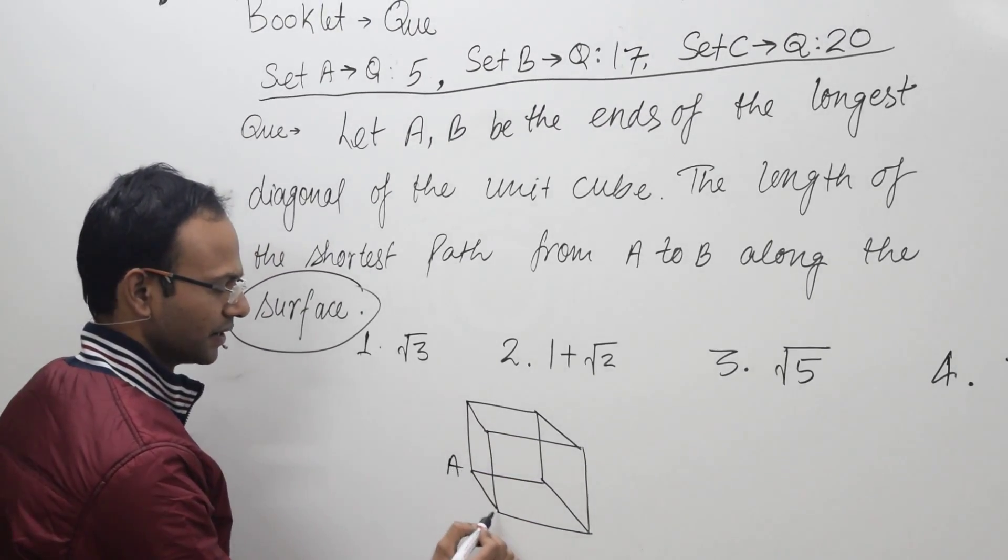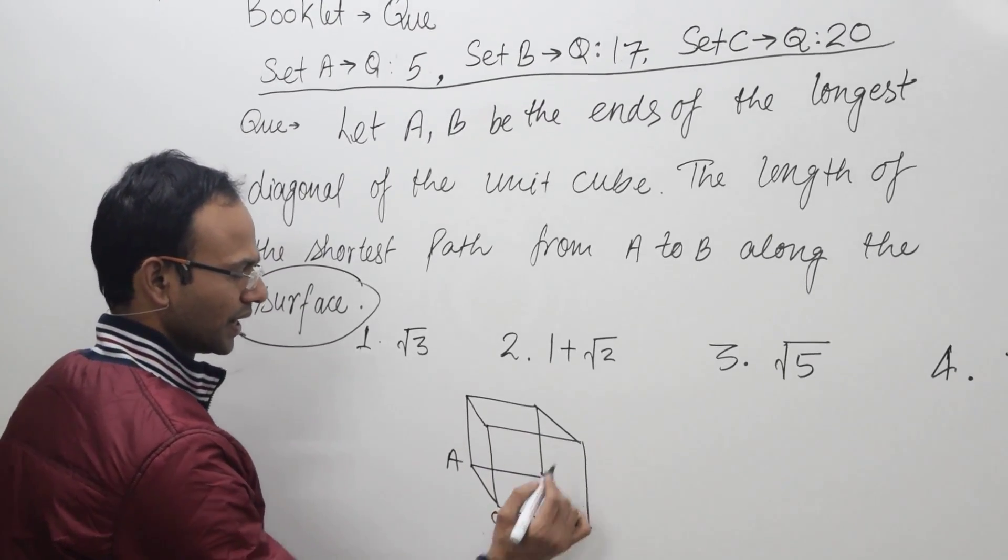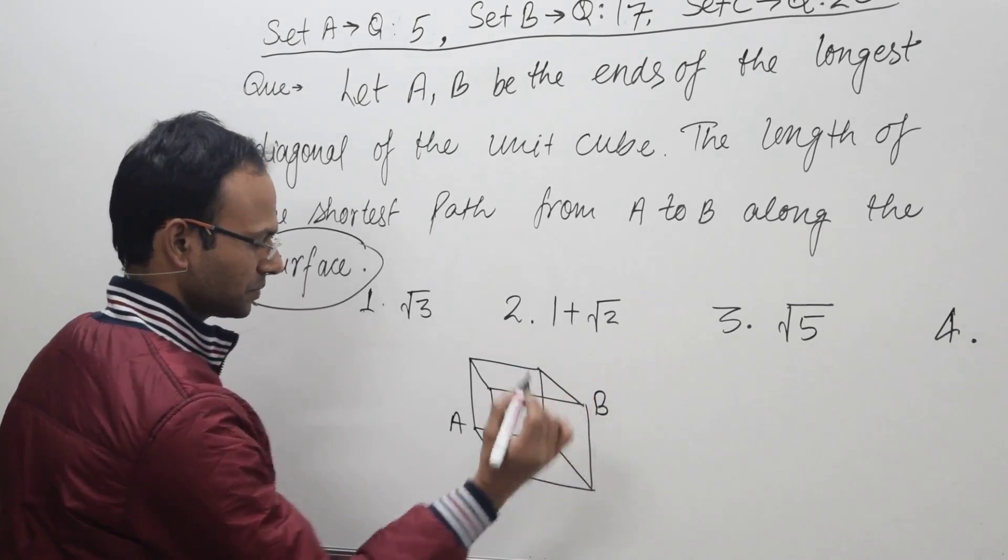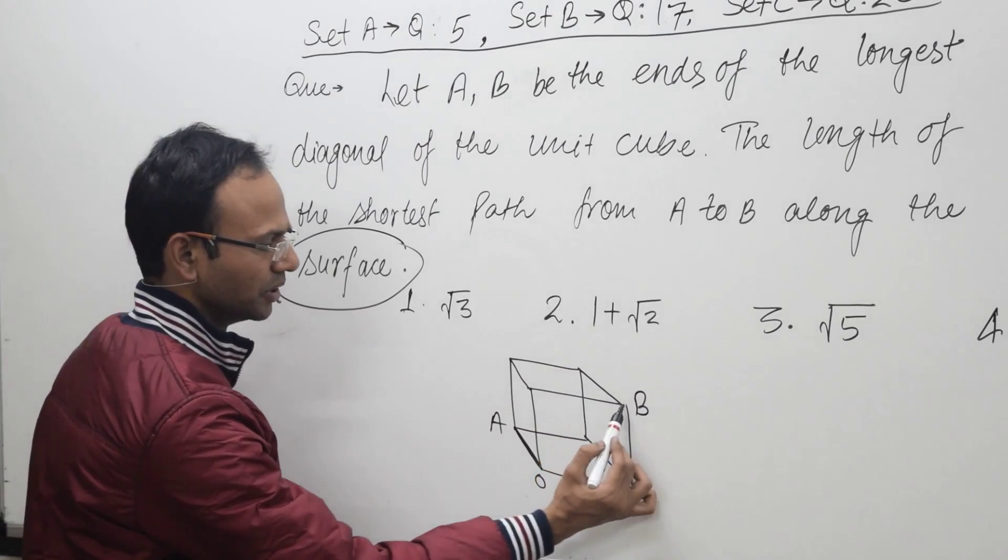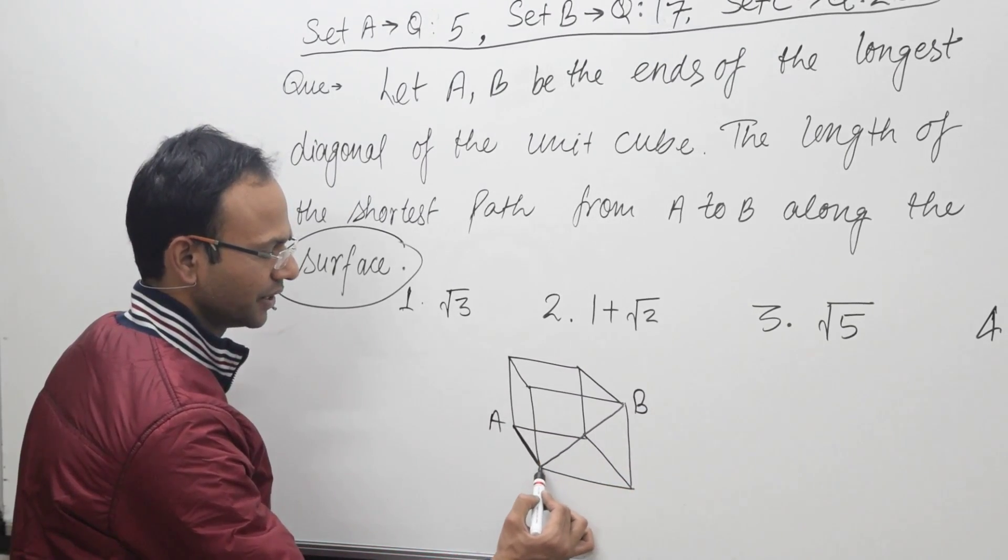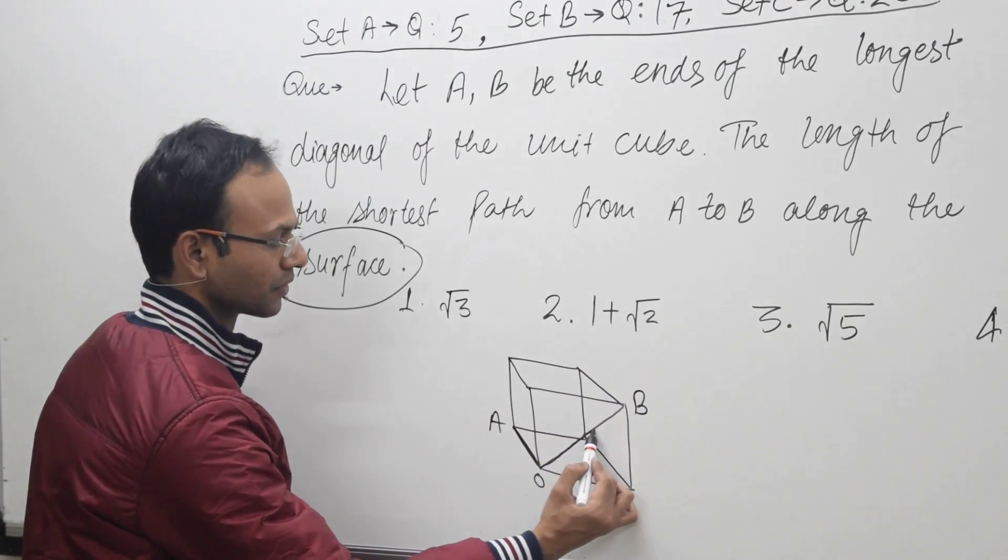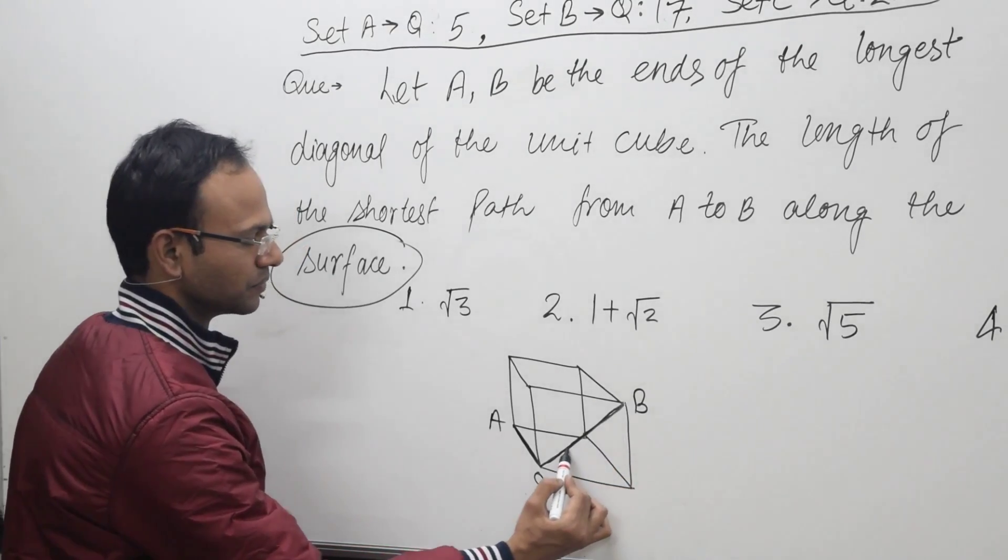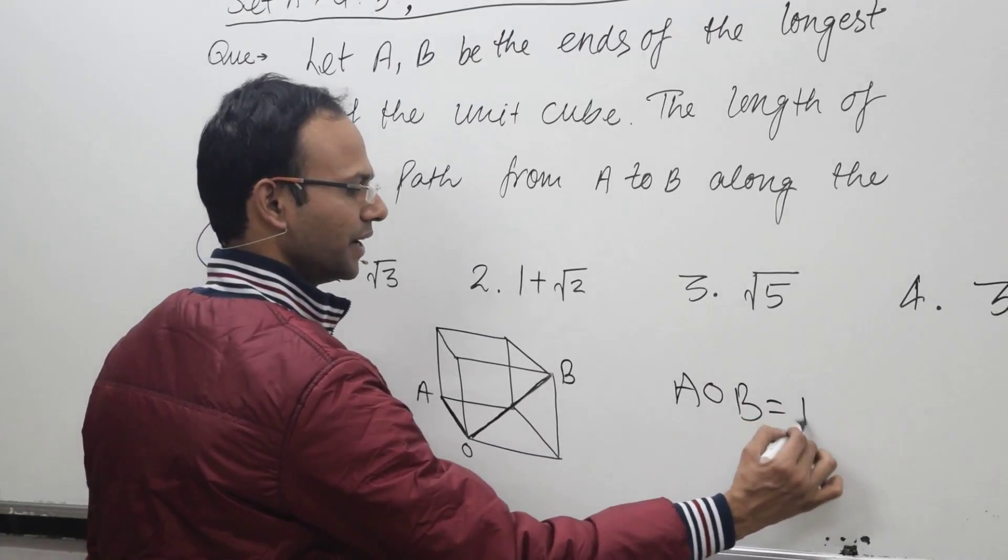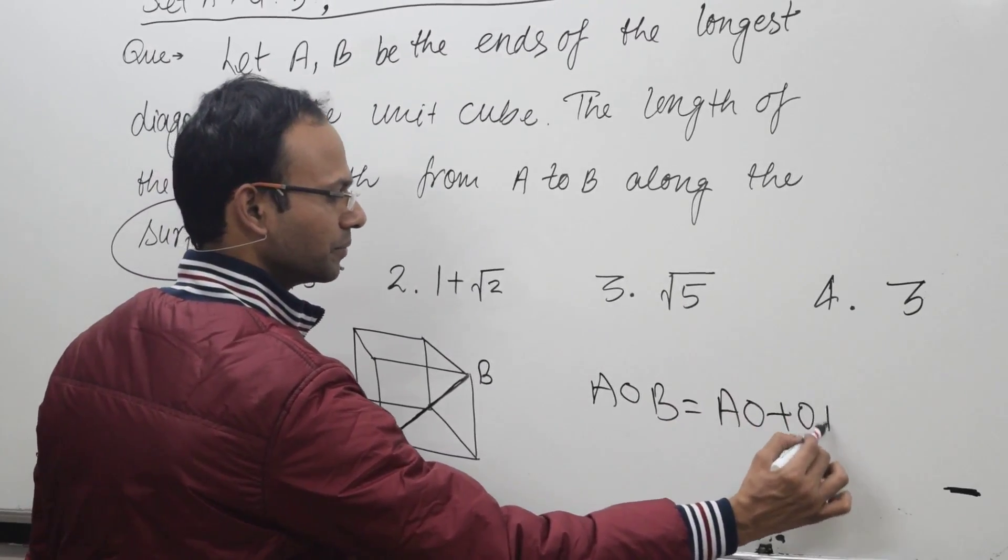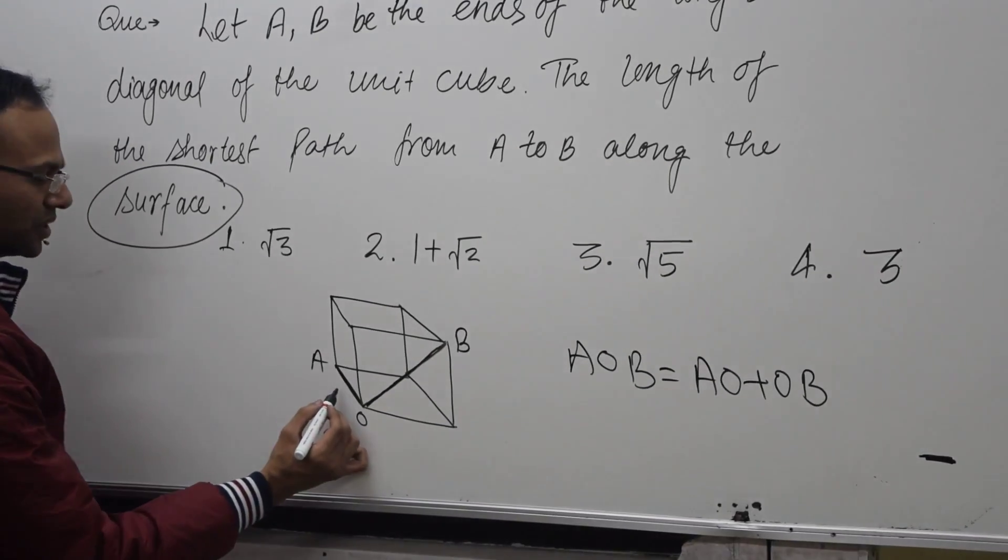AOB means the length of AO plus OB. Now, the side of the cube is 1 since the question says it is a unit cube. So AO is 1. We can apply the Pythagorean theorem to find OB.